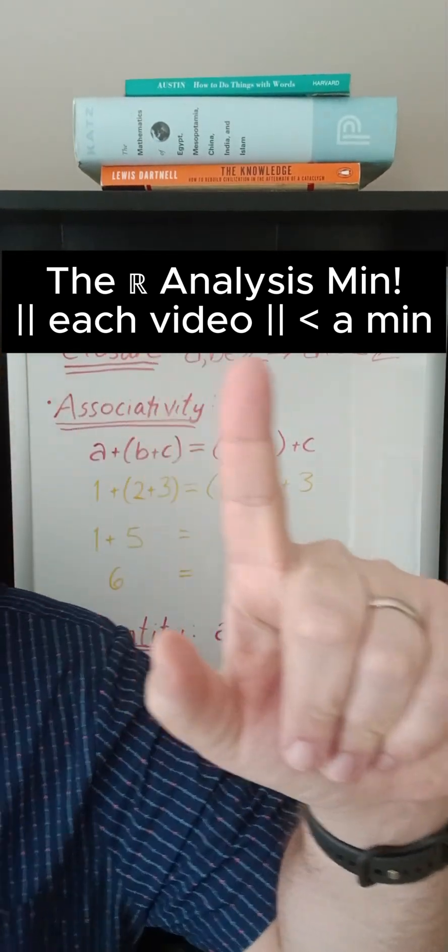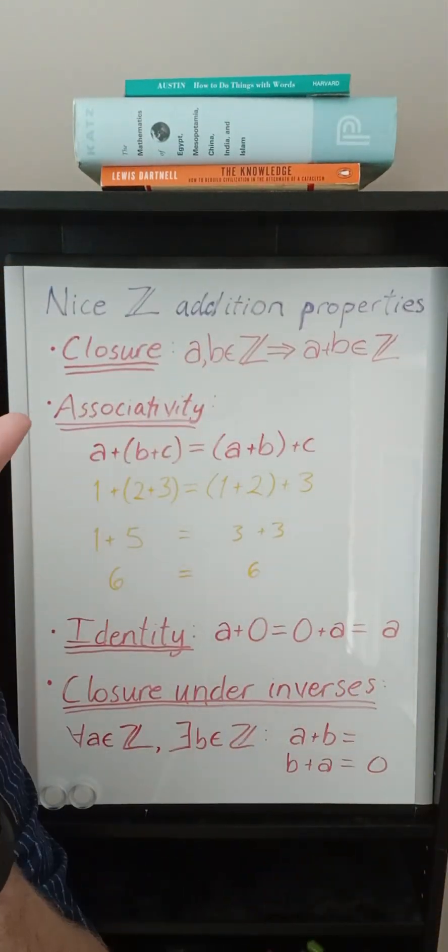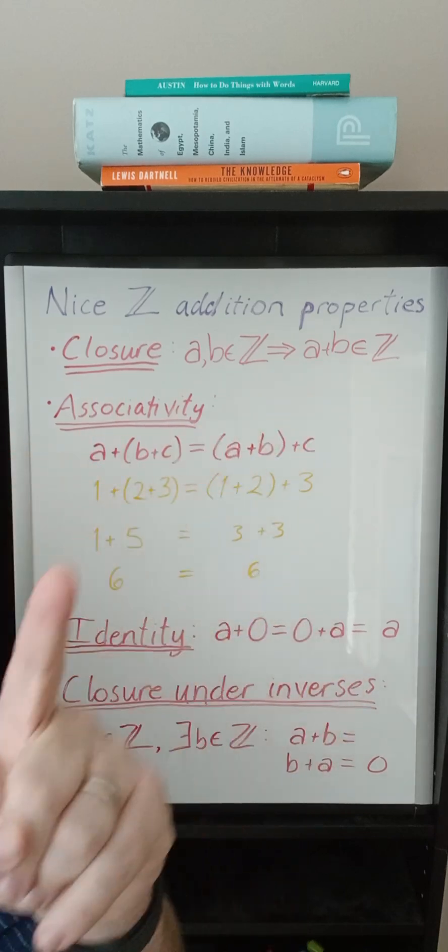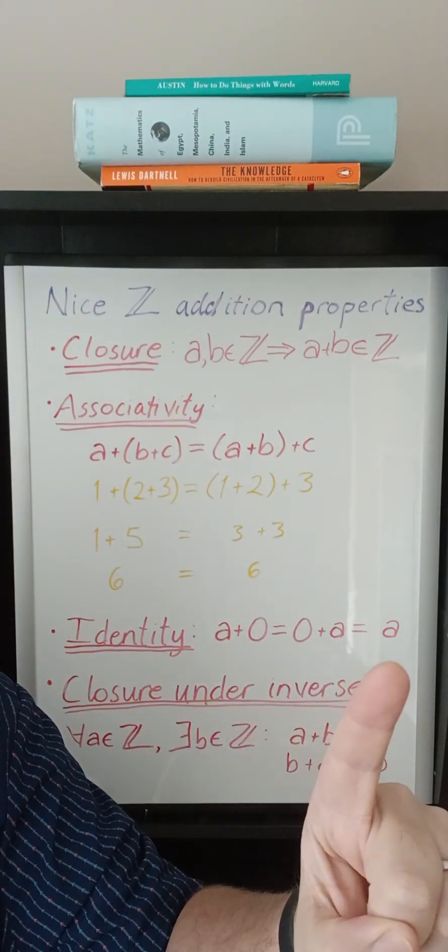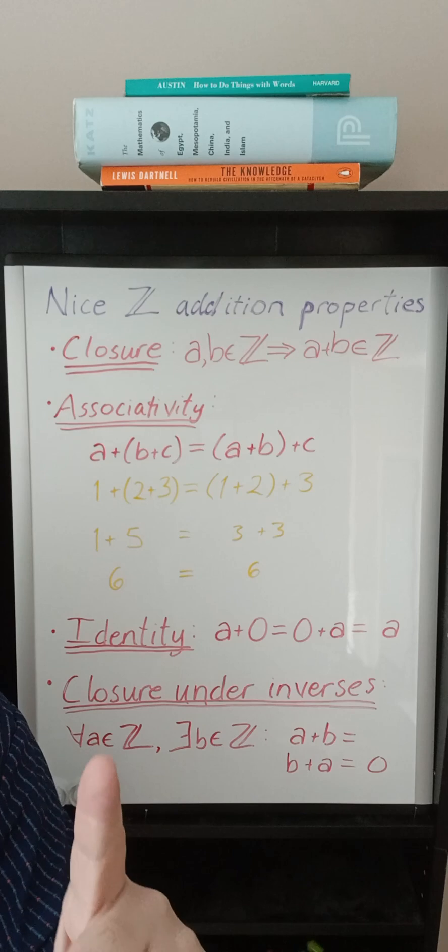In the last video we introduced the group properties of addition for the integers which included closure, associativity, there being an identity element in the integers that's zero for addition.